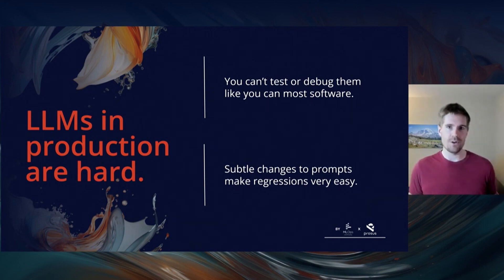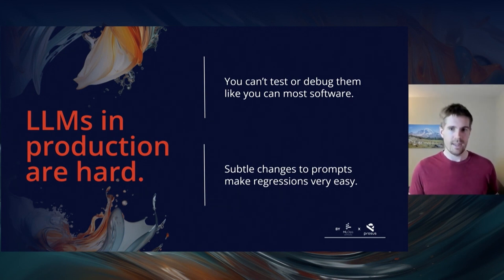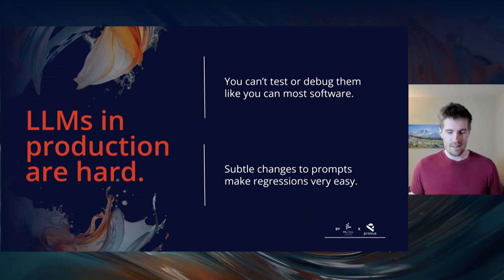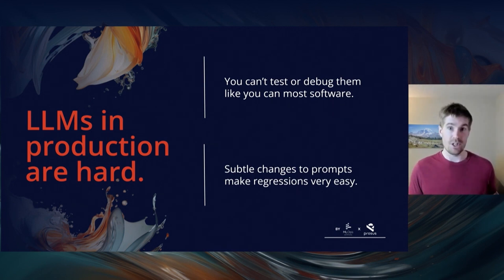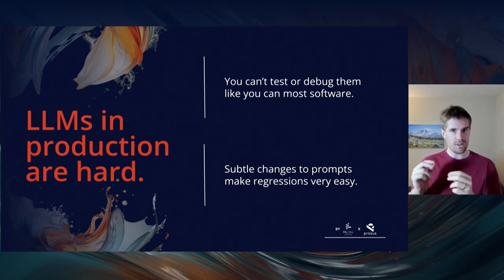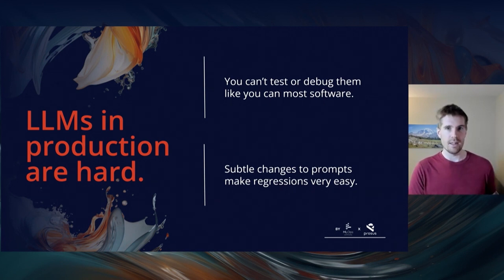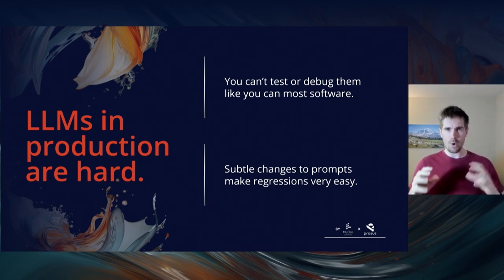After that initial splash, your users are going to expect a lot more. You'll have to iterate — the thing you shipped initially is not going to be perfect, and you'll want to fix things that aren't working without regressing things that are already working. The problem is that the typical toolbelt a software engineer has — unit tests, debugging in your IDE, regression tests — those are exceptionally difficult with LLMs, if not impossible. Very subtle changes in your prompt can massively influence the way the LLM behaves, making it really easy to introduce a regression for things you may not have even understood were working.